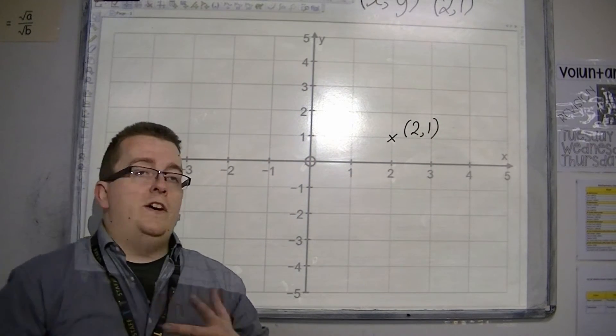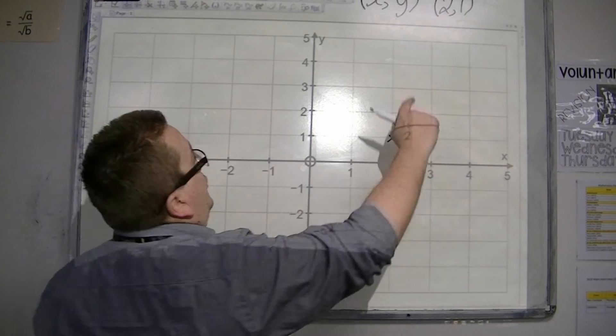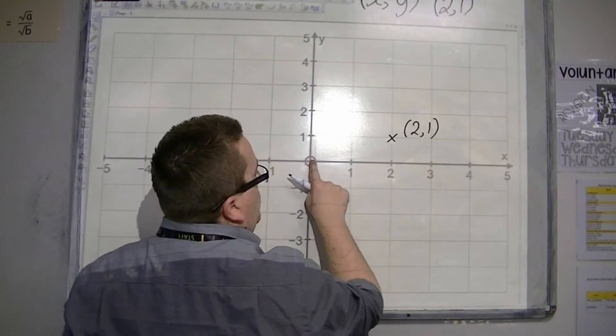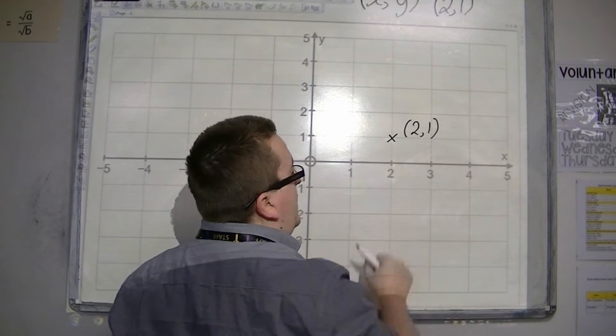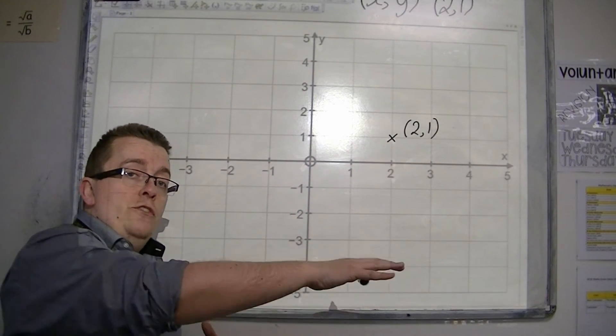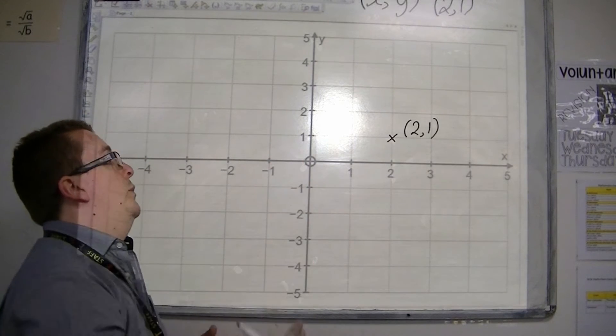So some people like to refer to this as 2 along the corridor and 1 up the stairs. 2 along the corridor and 1 up the stairs. So you're always going horizontal direction first, then vertical with your coordinates.